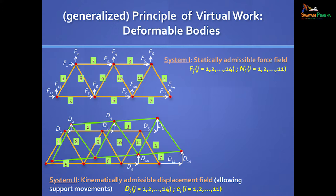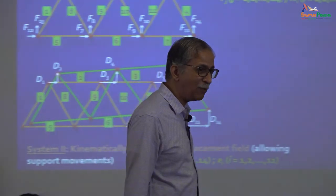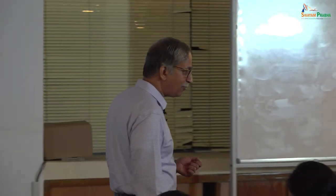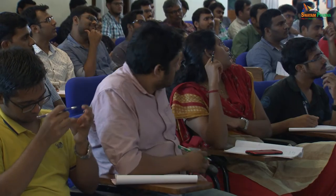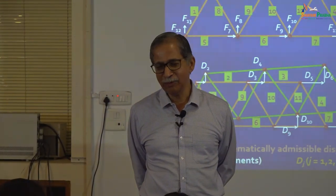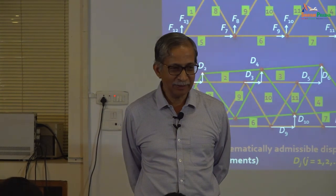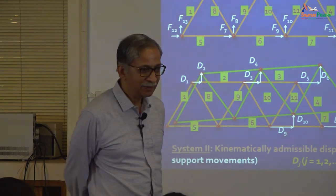This is all a geometry understanding — kinematics. The force-equilibrium relationships are statics. There need not be any cause-effect relationship between the two systems — both are arbitrary. The principle says there is a hidden law that every structure upholds, which you can extract from the principle of virtual work. Imagine specific numbers: F1 is 10 kN, F2 is 12 kN, F3 is minus 5 kN — satisfying equilibrium.